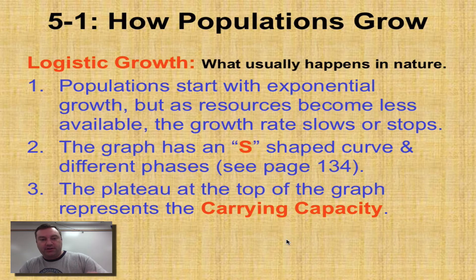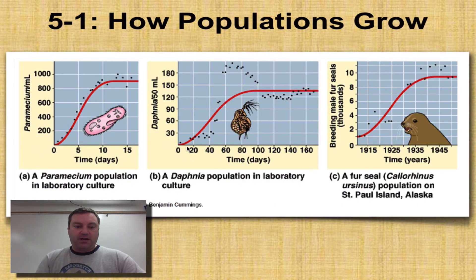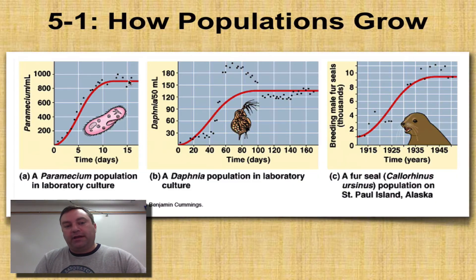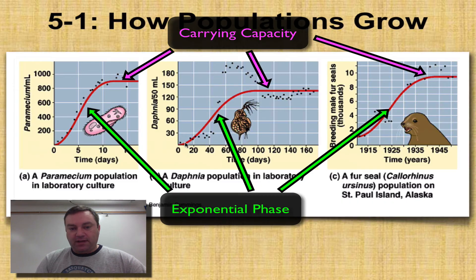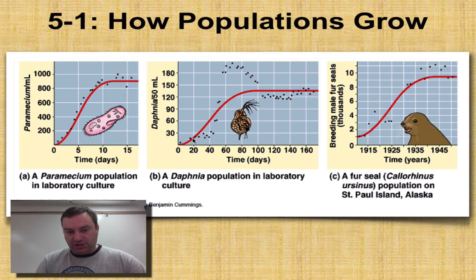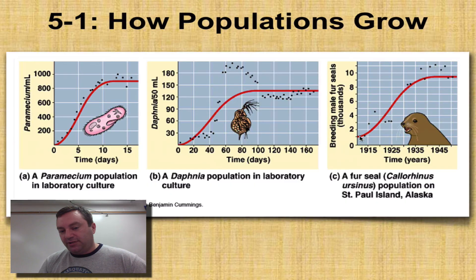Let's look at some graphs of populations that have gone through logistic growth. Here we have a paramecium — it went through logistic growth and once resources and food became less available it reached its carrying capacity right here. This is called a water flea, scientific name Daphnia, a somewhat microscopic organism found in fresh water. They had a peak and then crashed down to their carrying capacity — a best fit line shows logistic growth clearly. Over here we have fur seals off of an island in Alaska. They were almost wiped out through the fur trade in the early 1900s, became protected, went through exponential growth, and have currently reached their carrying capacity.